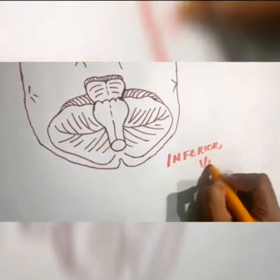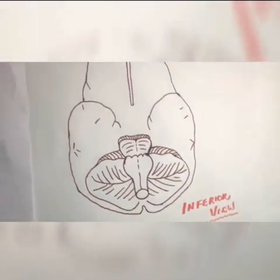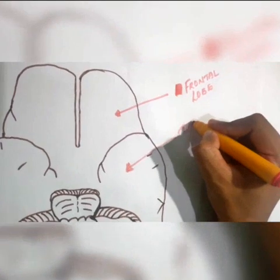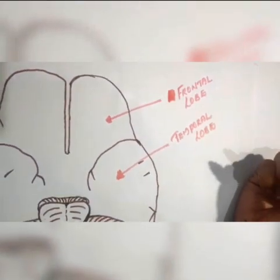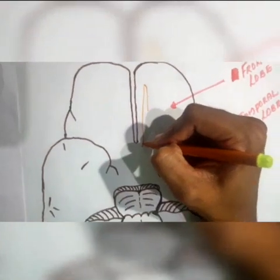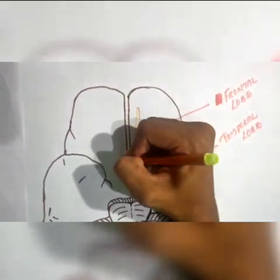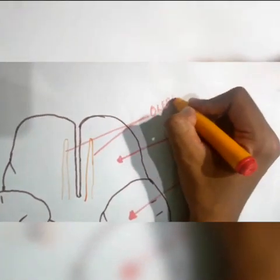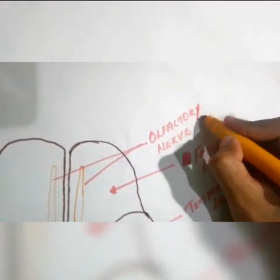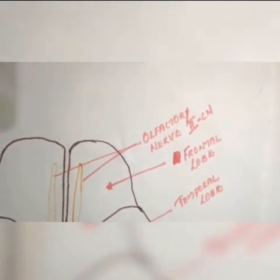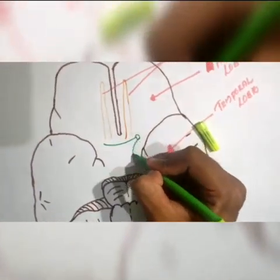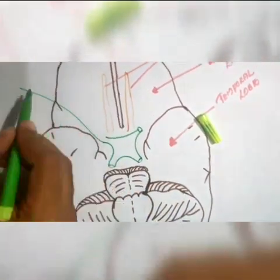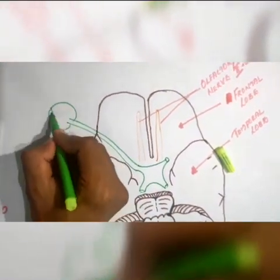Let's have a look at the inferior view. In this view, you can see the frontal lobes here and the temporal lobes on the sides. You can also see the first and second cranial nerves. Here is the olfactory nerve, the first cranial nerve, which is responsible for your sense of smell. It's important to have a look at the optic nerve, which is the second cranial nerve, responsible for your vision.